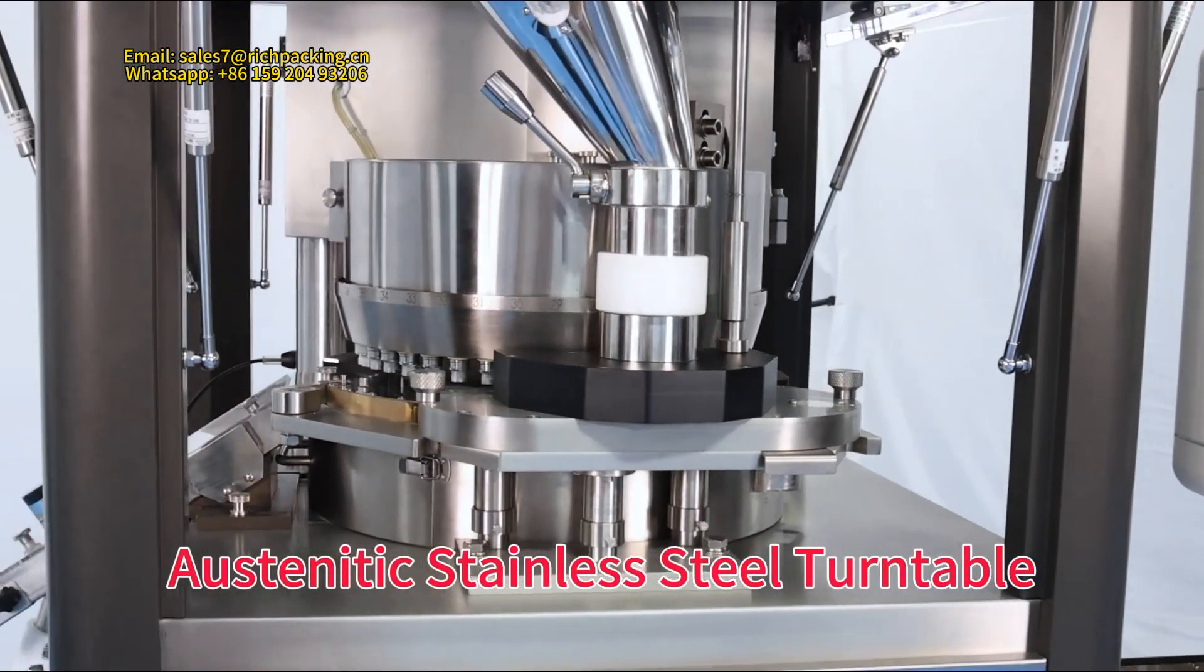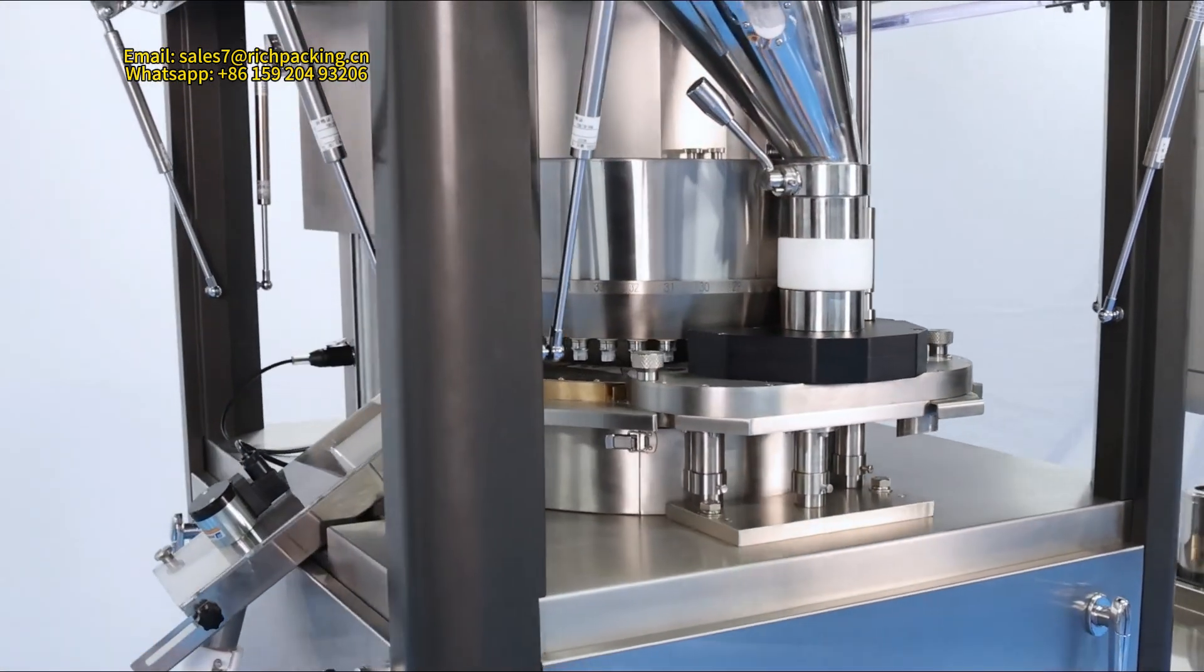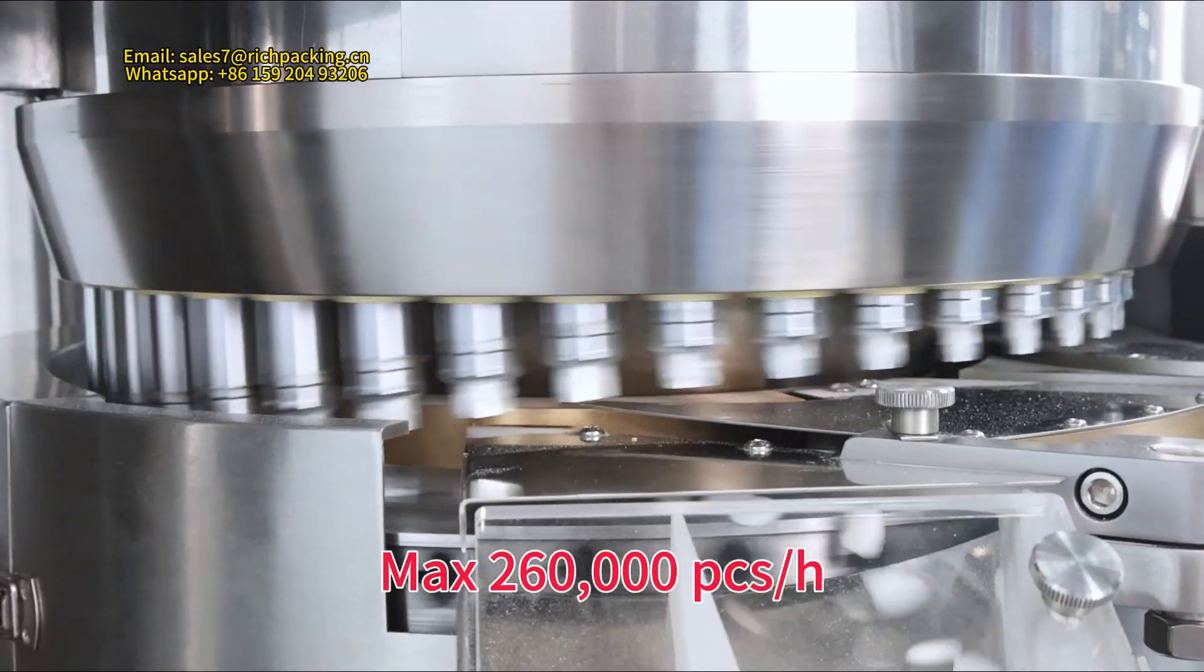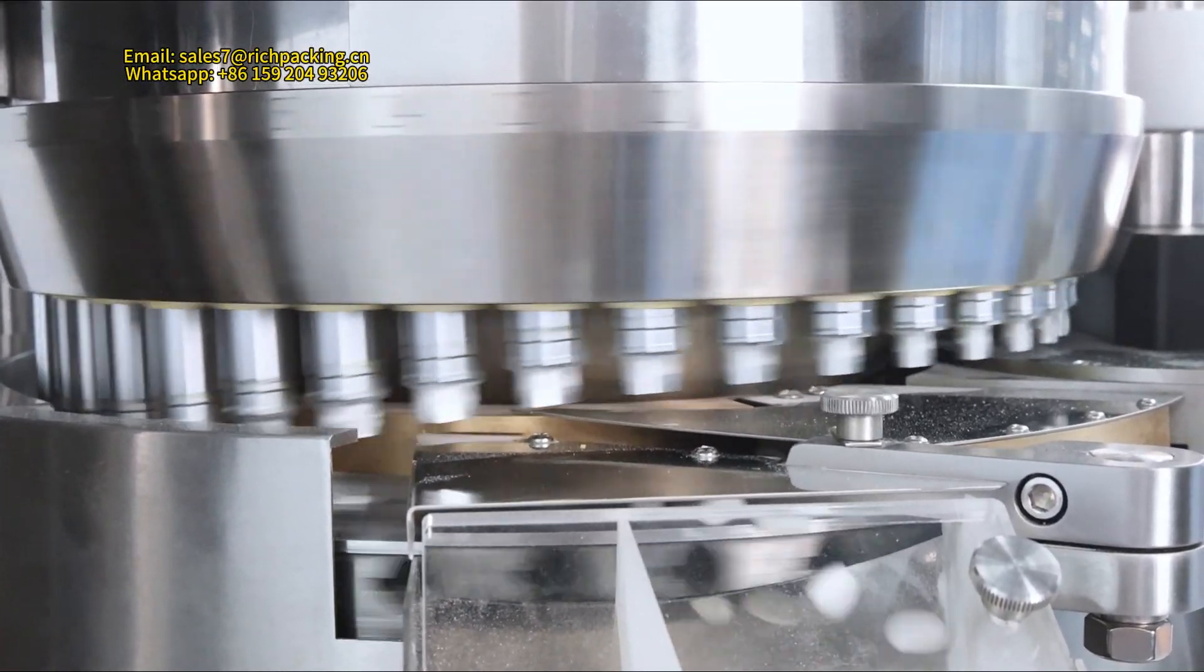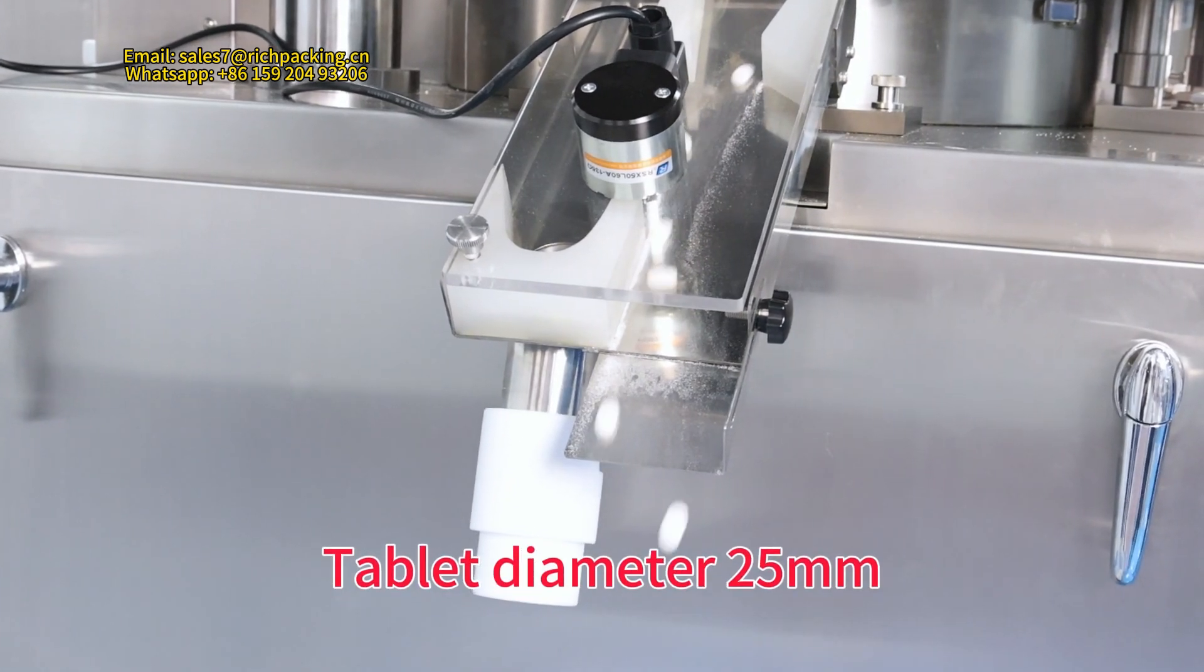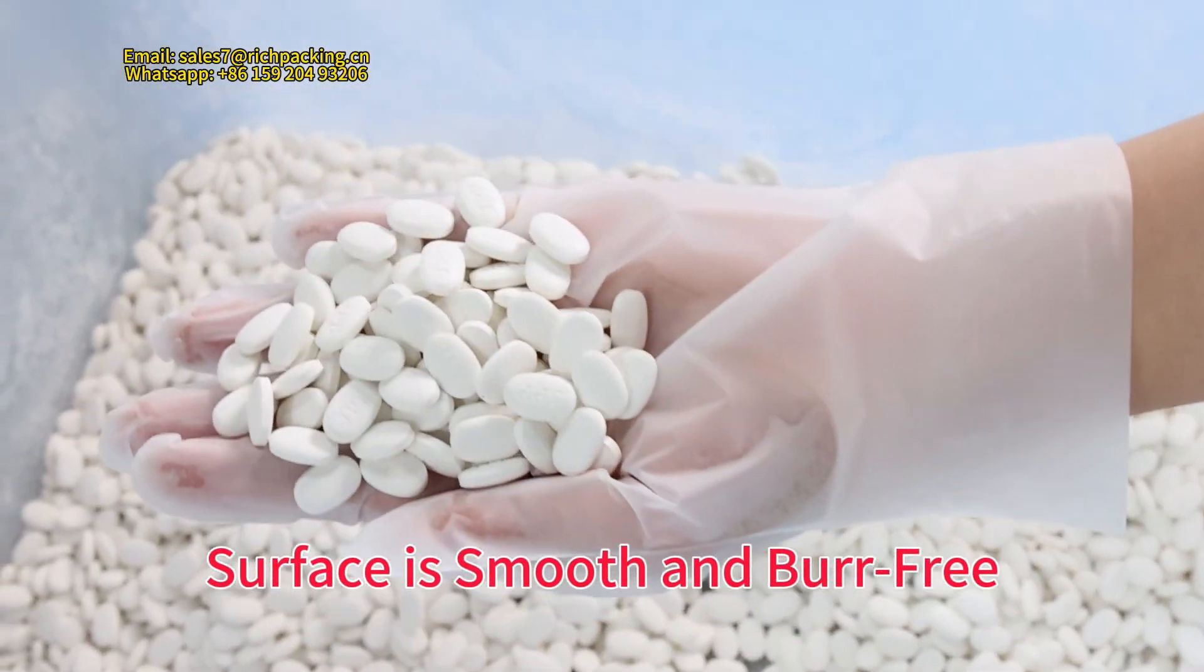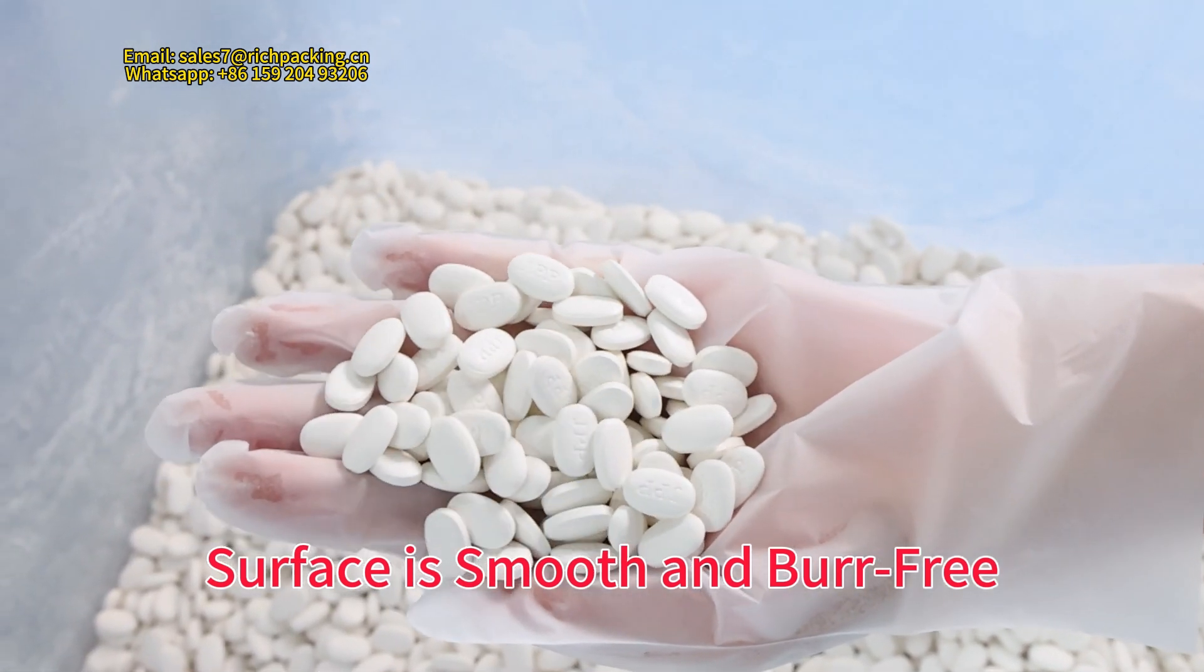Turntable made of austenitic stainless steel. Mass output 260,000 pieces per hour. Tablet diameter 25mm. The tablet surface is smooth and burr-free.